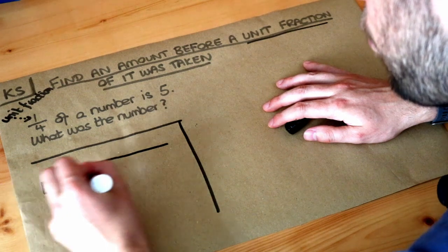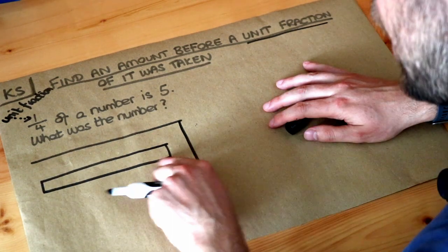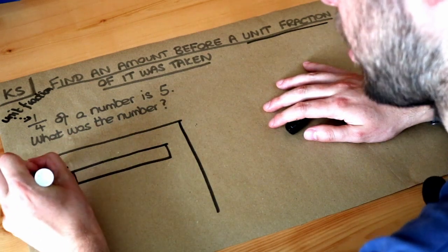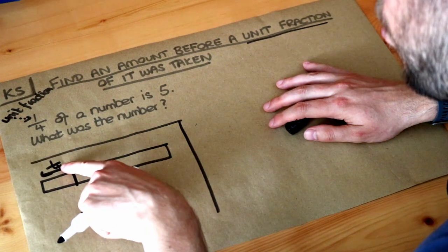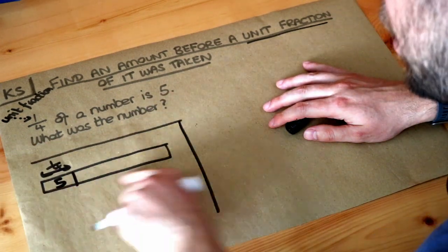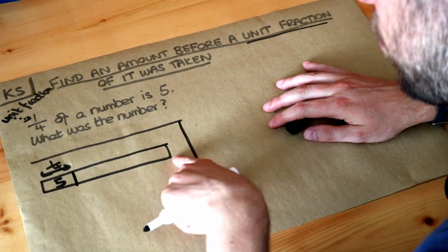We've got some whole, so this whole bar is the whole of something, and of this number we're taking a quarter of it. A quarter of that number is 5. So a quarter of this whole number is 5. We want to work out what's the original number.